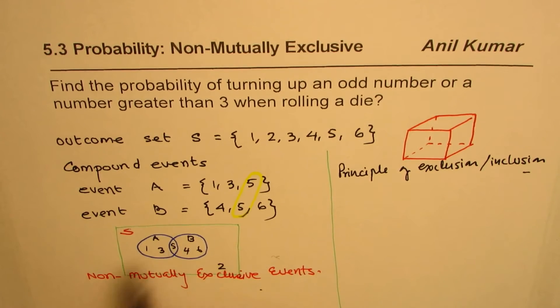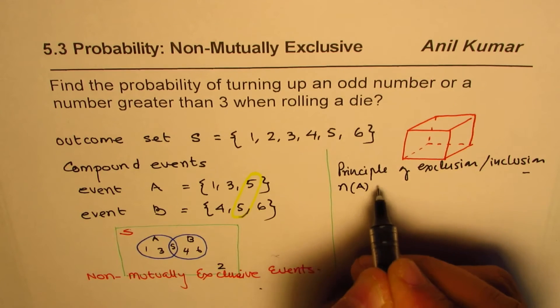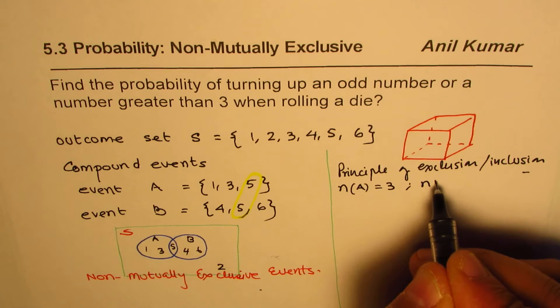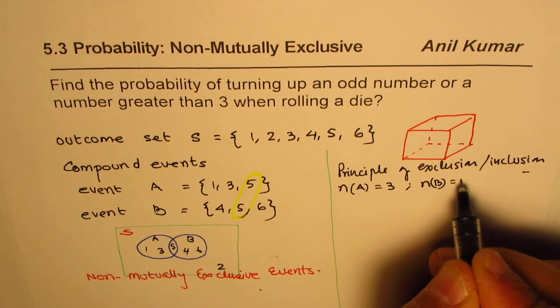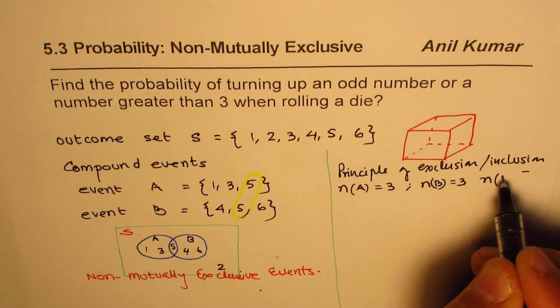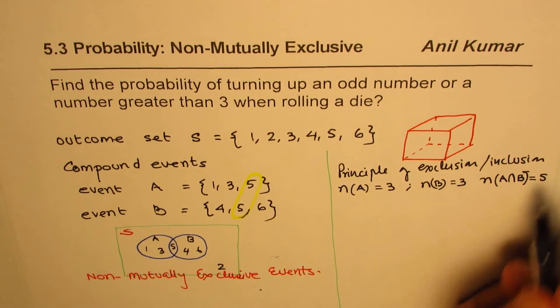So the idea is 5 is common. So if I add these events, then what happens? In that case, 5 gets added twice. Do you see that? So what we have here is that the number of elements in A are 3. Number of elements in B are also 3. However, the number of elements in intersection of A and B, which are common, is 1, right?